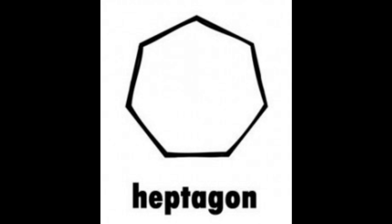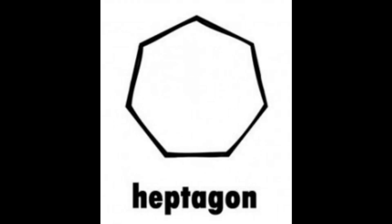A heptagon is a shape that has seven sides and is a polygon made up of seven connecting sides.